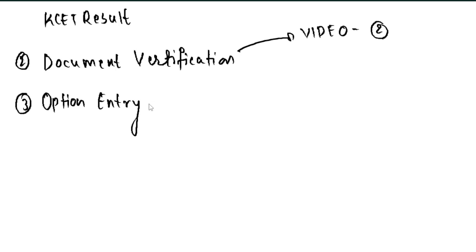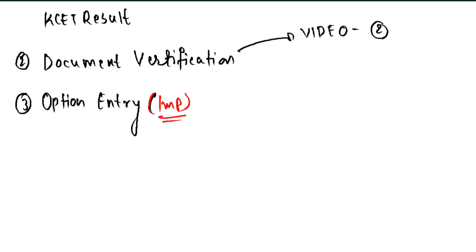Option entry is a very important step. Once you submit your options, you cannot change them. The college allotment will happen based on your option entry. This is one of the most critical steps - many students get confused about which college to select based on their rank.